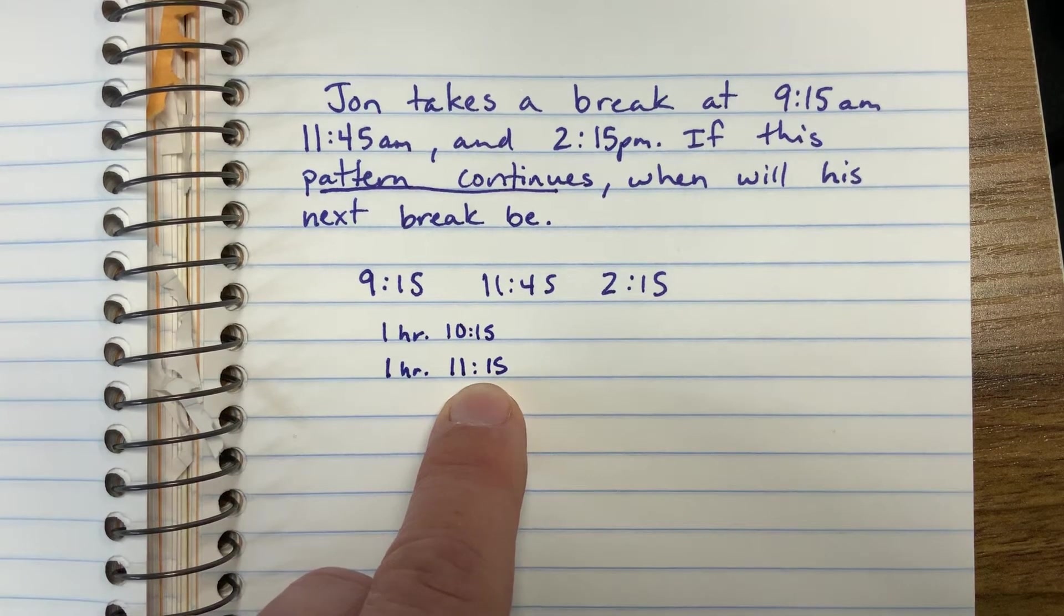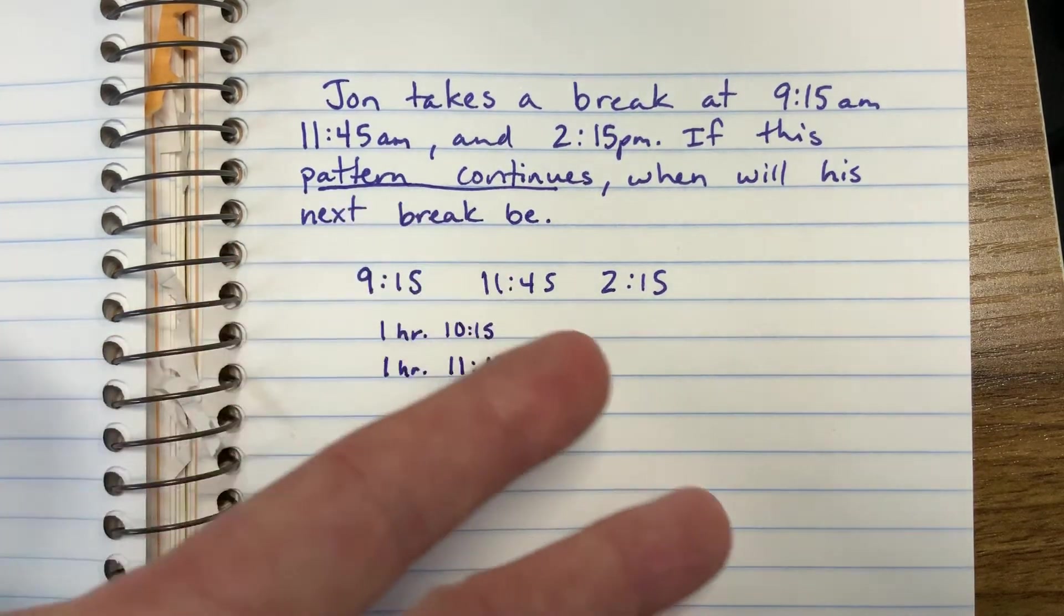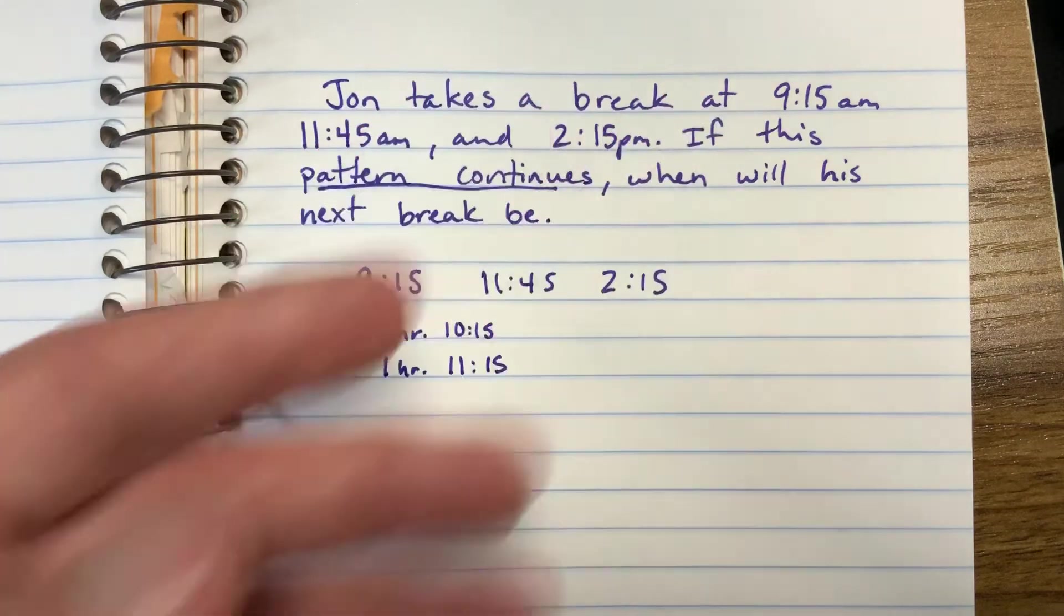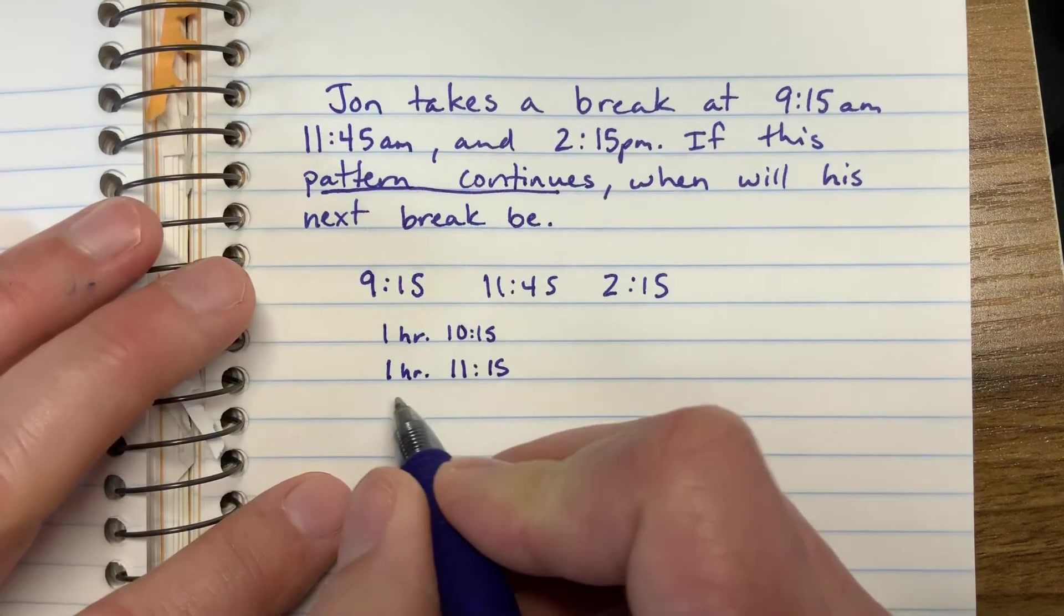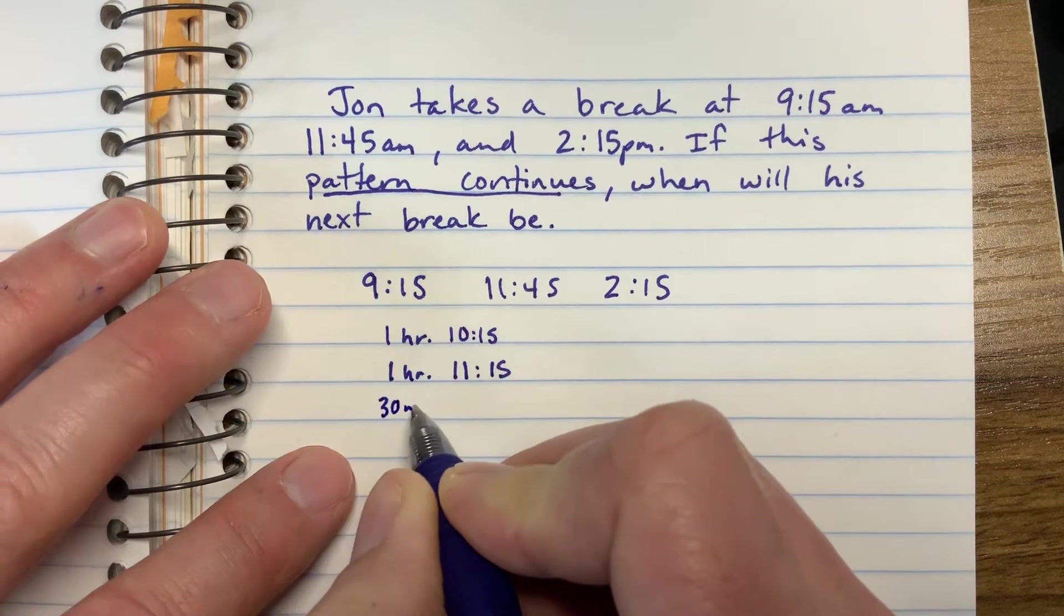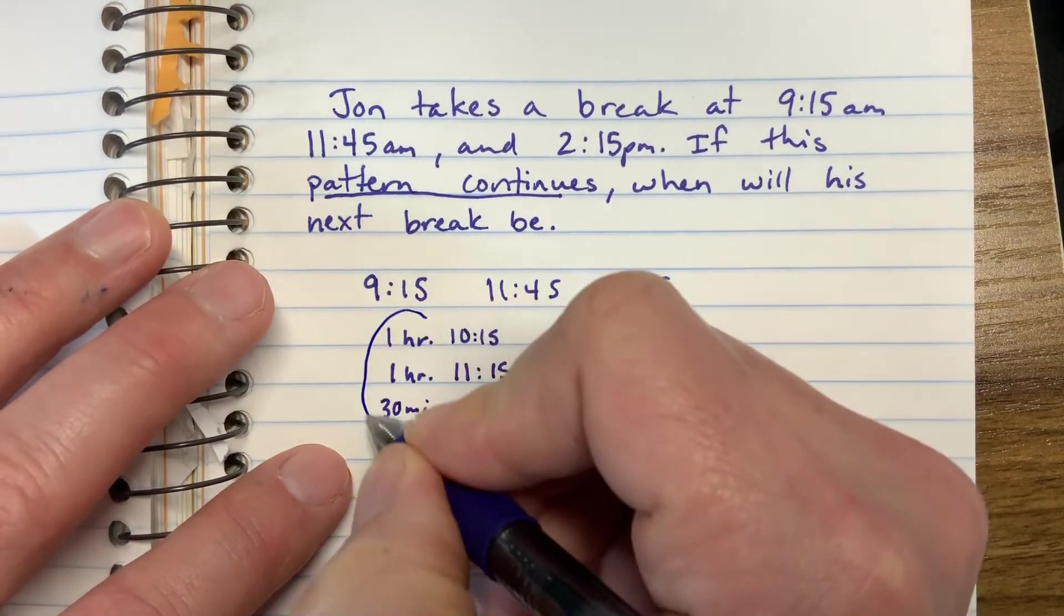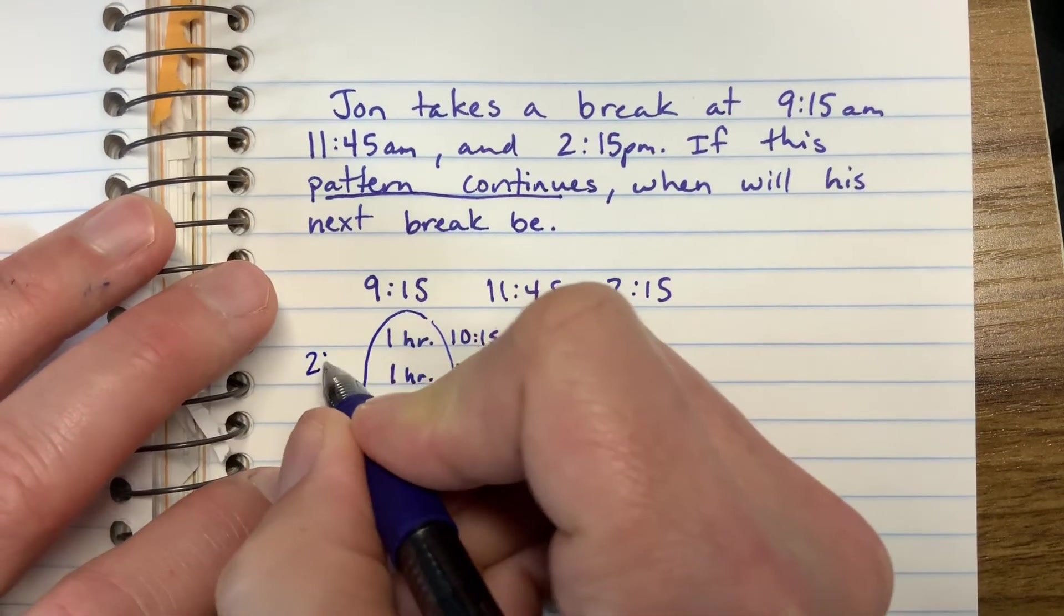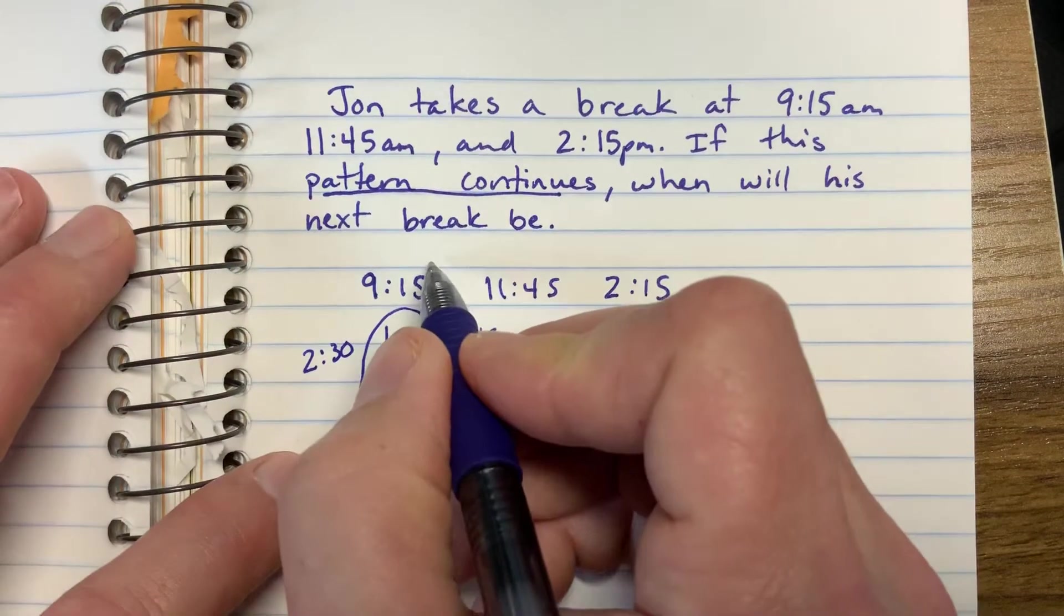And then I've got to think about how much more time is in between 11:15 and 11:45. Well, if I count by fives: 20, 25, 30, 35, 40, 45, that's six fives. Six times five is 30. So another 30 minutes will bring us to 11:45. And if I put all of this together, I get two hours and 30 minutes is the difference between 9:15 and 11:45.